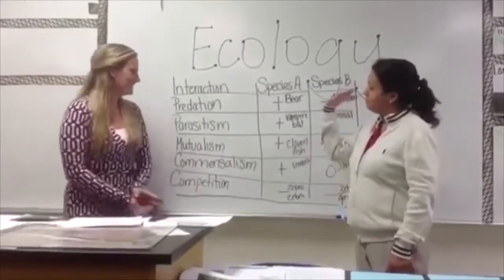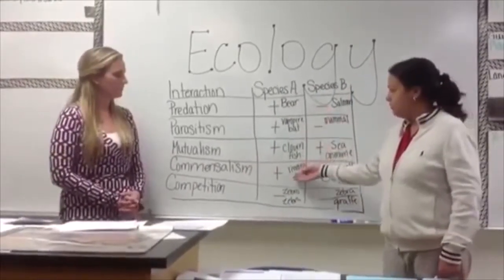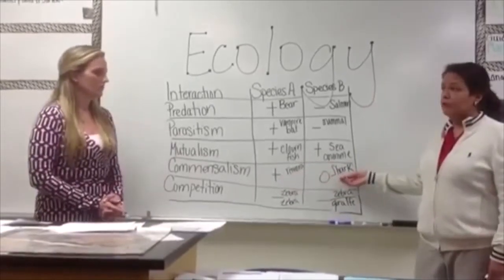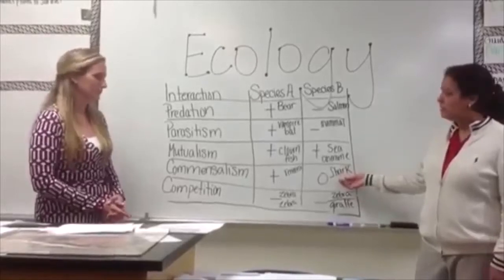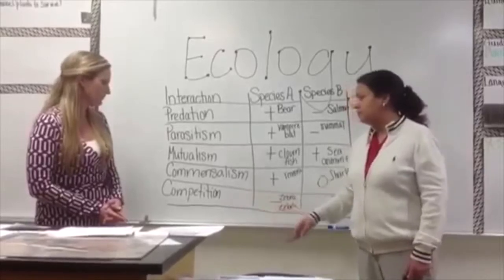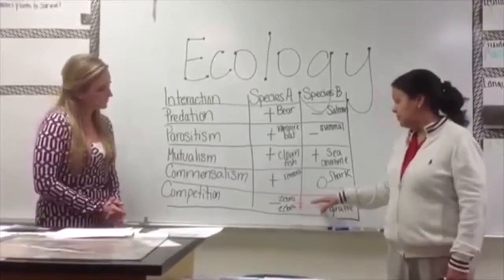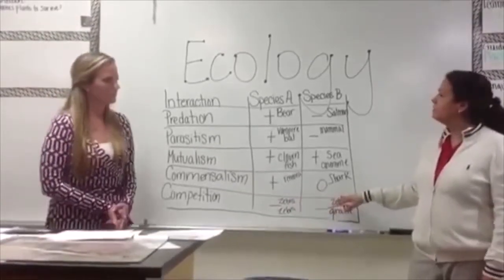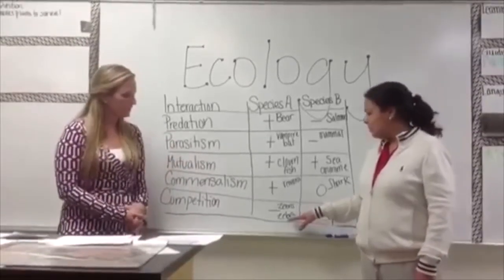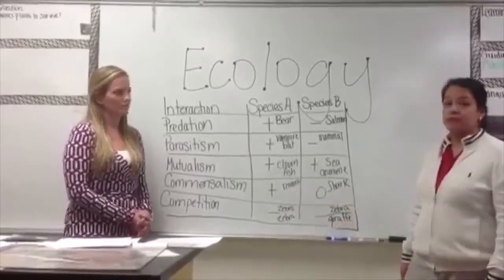For commensalism, species A — the remora — is benefiting from its relationship with the shark. But the shark is not hurt and not helped either; it's just kind of hanging out. We call that a zero benefit. Lastly, competition is a negative-negative relationship. This could be two zebras competing together — intra-specific competition — or the inter-specific competition of a zebra and a giraffe competing for the same resource.